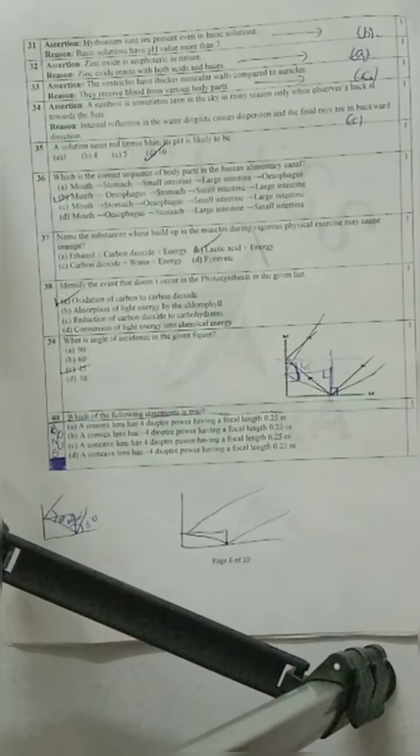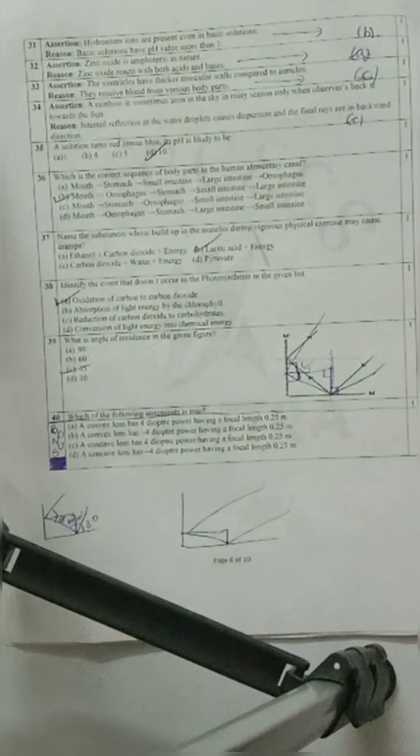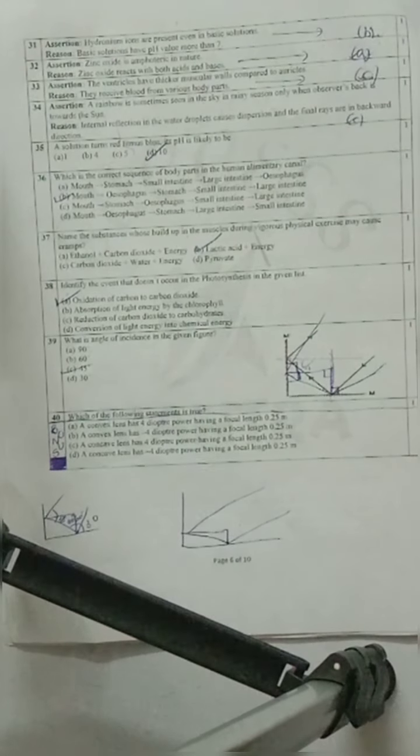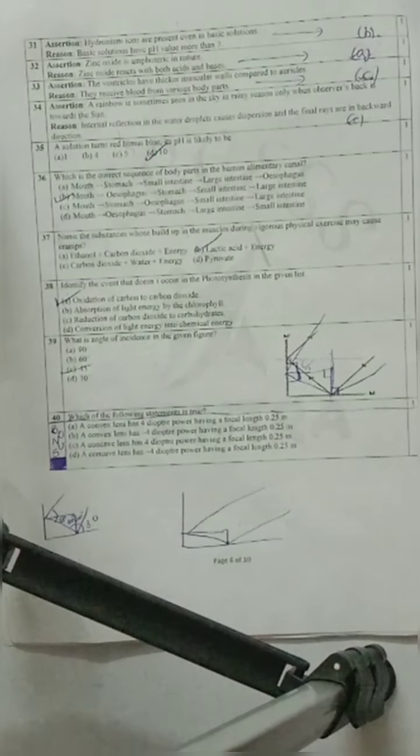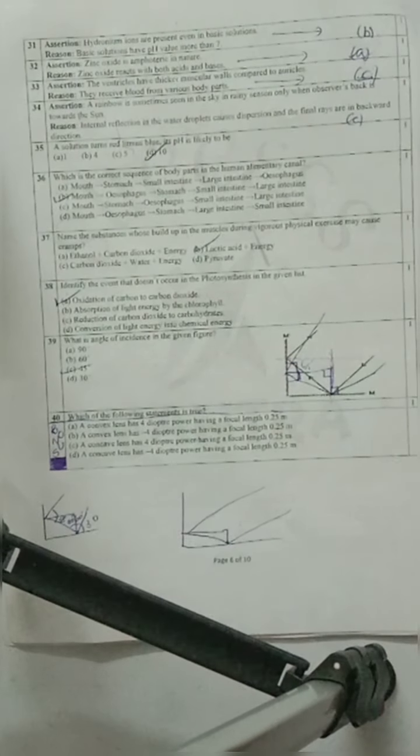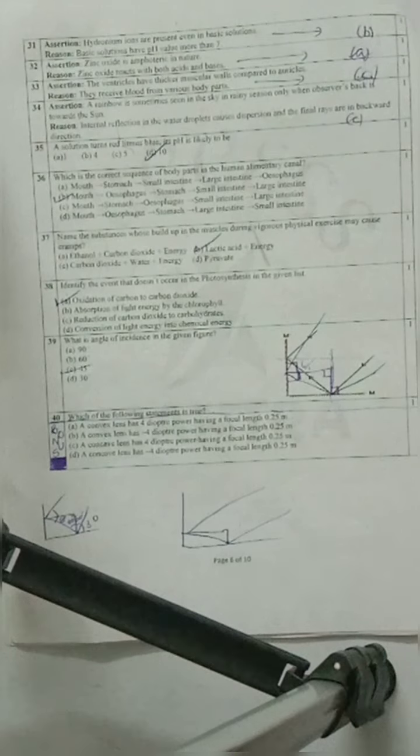Question 38: Identify the event that does not occur in photosynthesis in the given list. Option A is your correct option, which does not occur in photosynthesis. Because in photosynthesis, first absorption happens, then conversion, then reduction.